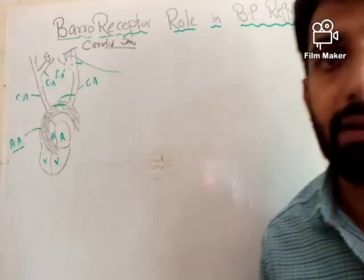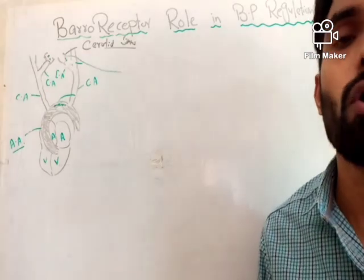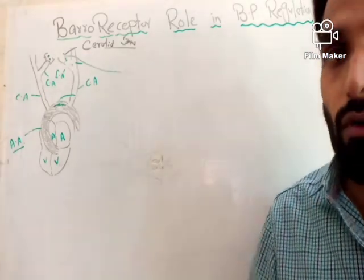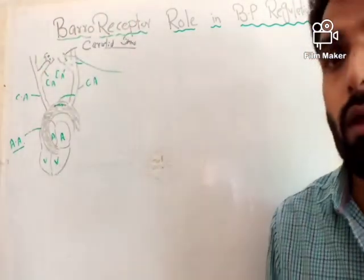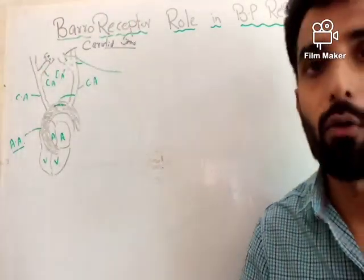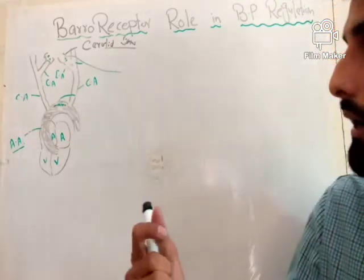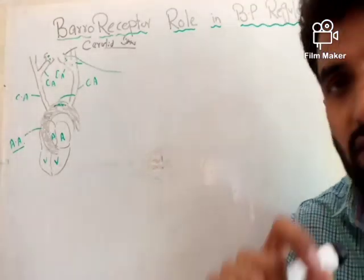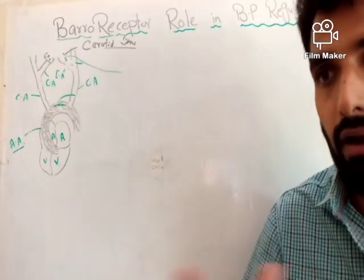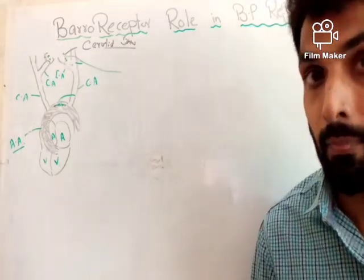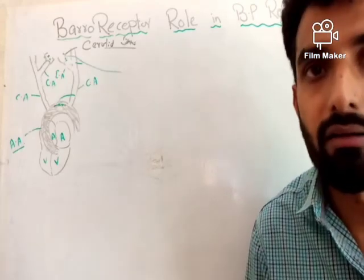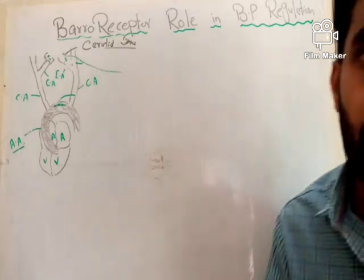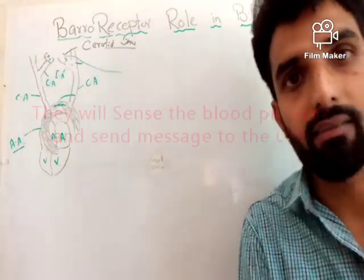Hello friends, we were talking about hypertension and in today's lecture we will talk about the role of baroreceptors in the regulation of blood pressure. First of all, let's talk about what baroreceptors are. Basically, baroreceptors are just nerve endings — nerve endings of cranial nerve 9 and cranial nerve 10 — that are present on different parts of the blood vessels and are responsible for sensing blood pressure.